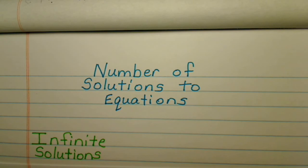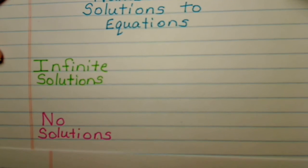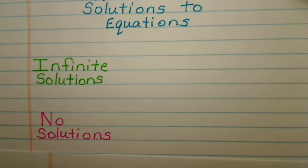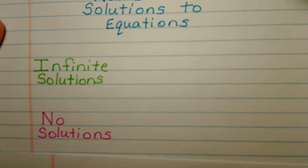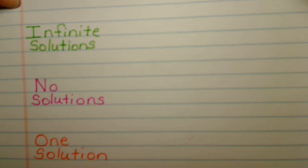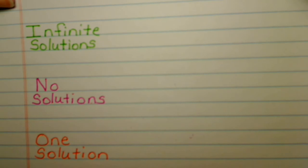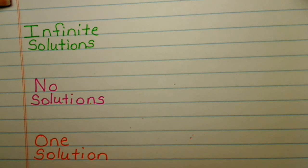You could get infinite solutions, which means you could get an unlimited amount of possible answers. You could get no solution, which means there's not anything you can substitute in for the variable that would solve the equation. And then there's also one solution, which is what you really get most of the time — when you solve your equation and find out what your variable is equal to. So let's look at what each of these mean.